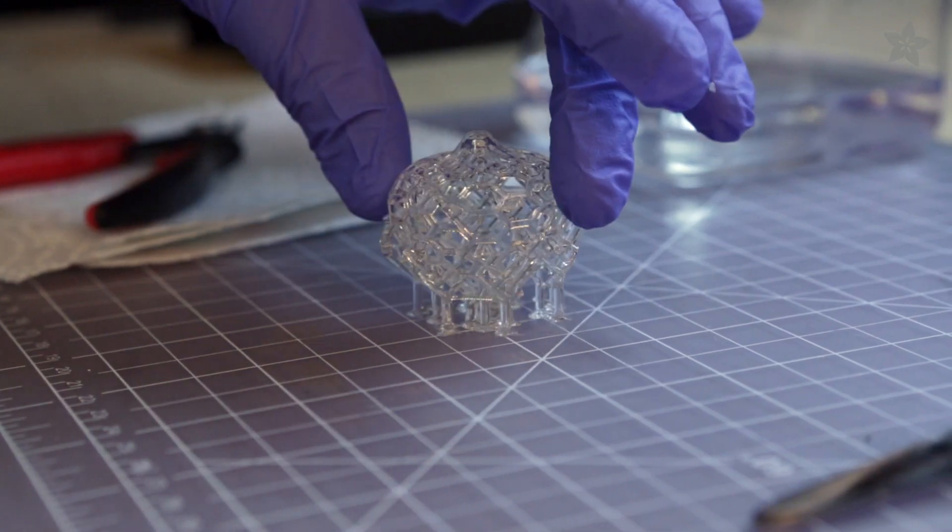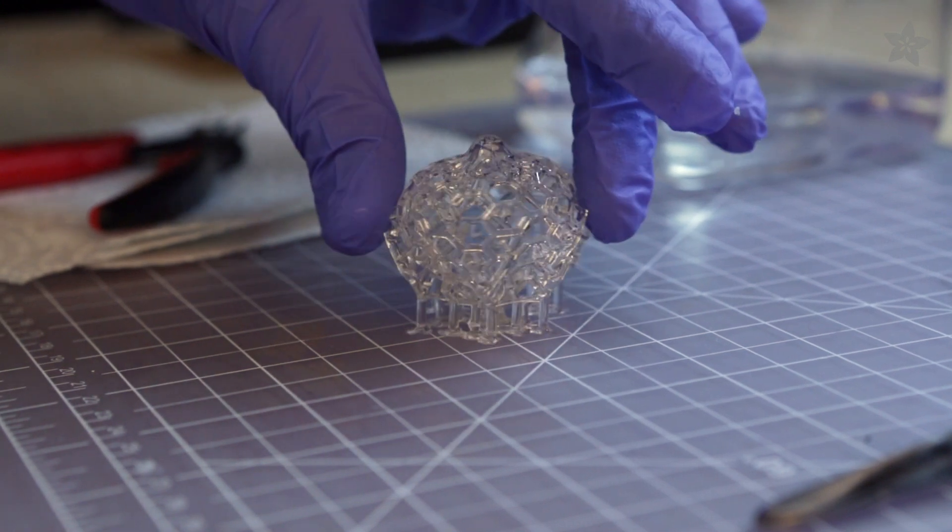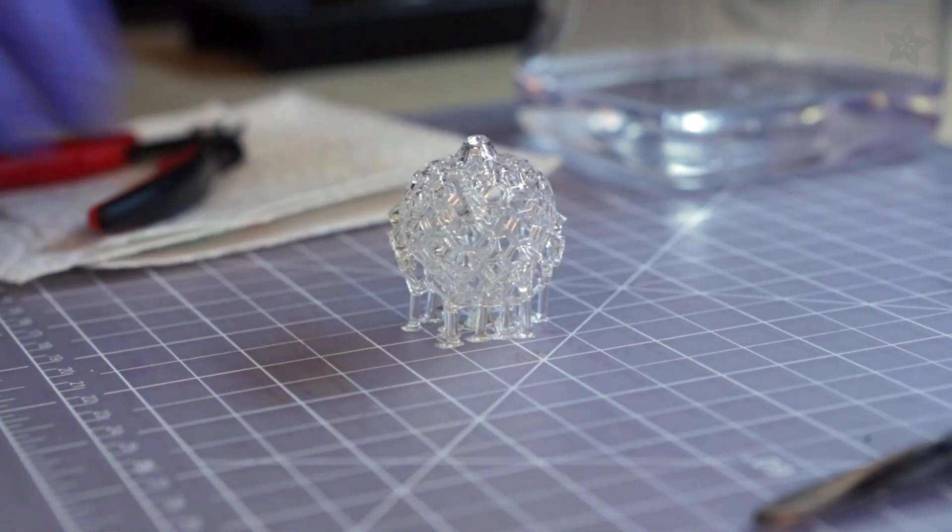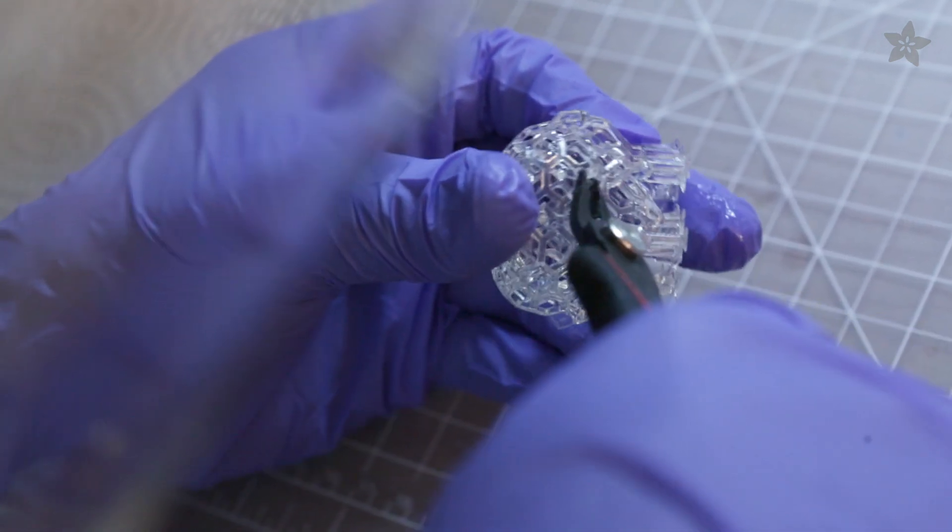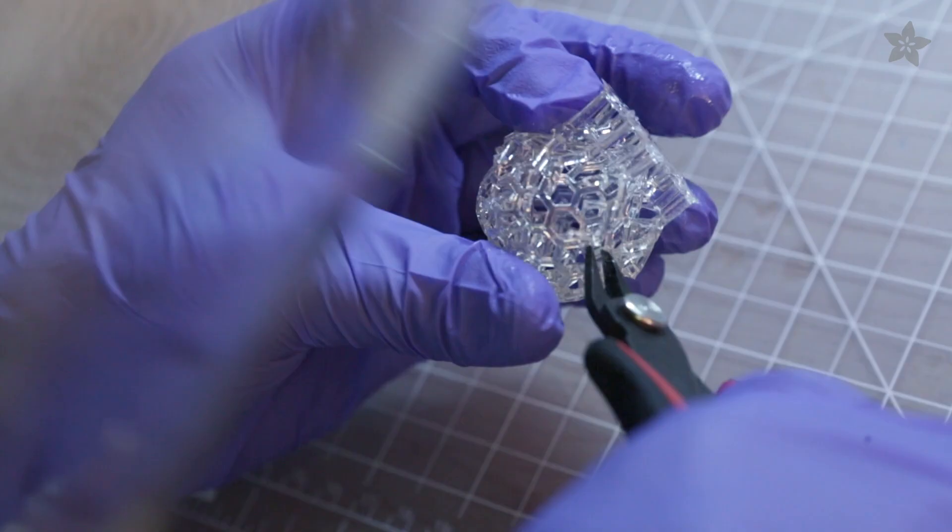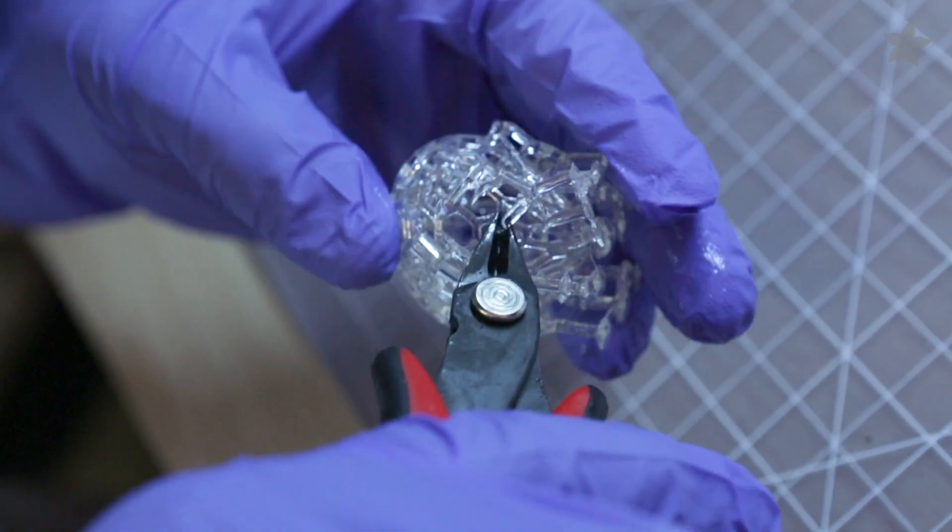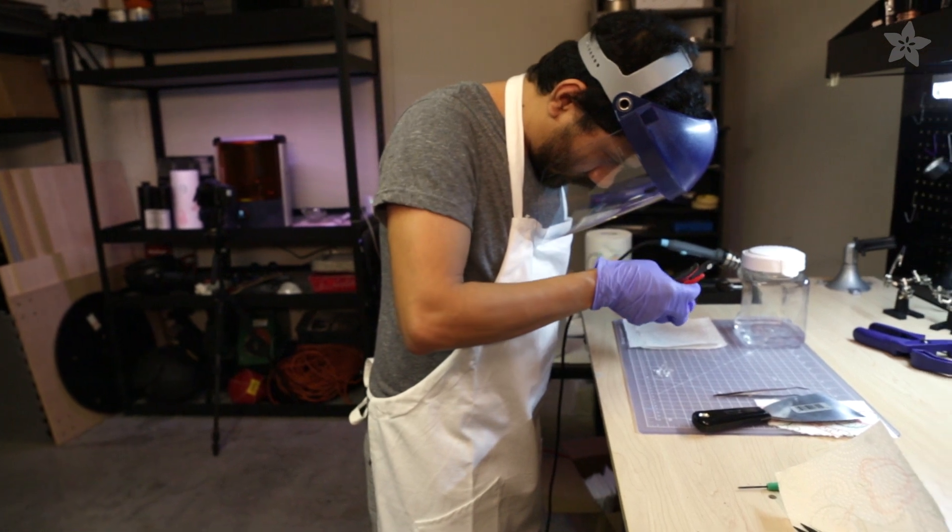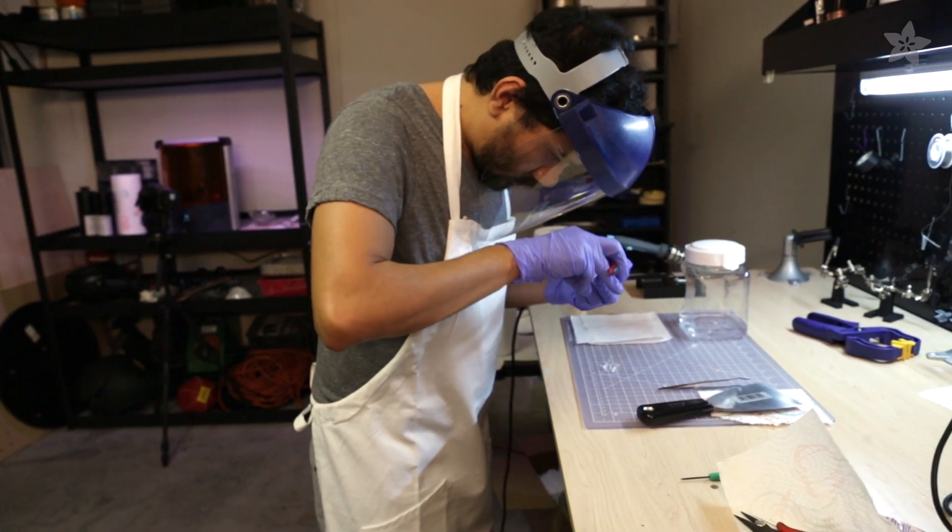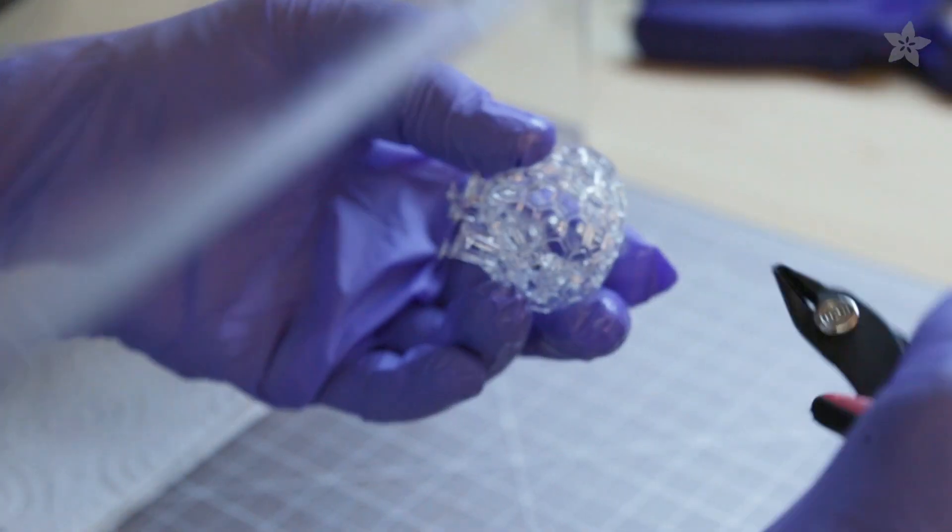Now let's take a look at removing support material. To remove the support material, we recommend using flush diagonal cutters. You can start by snipping off the tips from the supports and then removing branches as larger groups. Try to cut the tips away from the part to prevent any surface damage. We definitely recommend wearing a face shield to protect yourself from any flying bits, especially when breaking apart those smaller pieces.